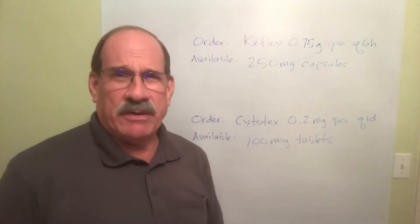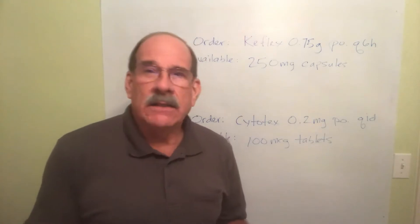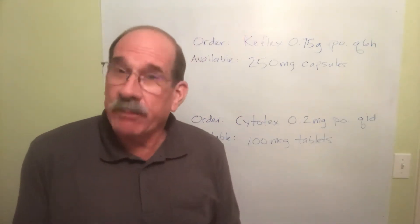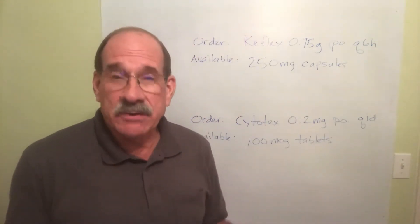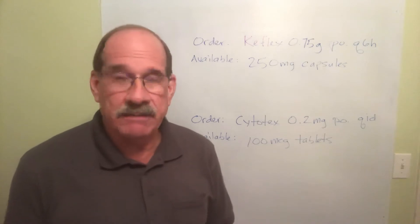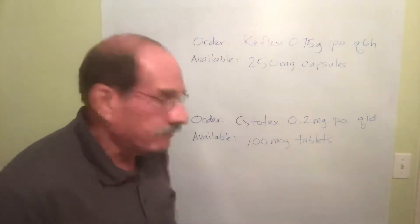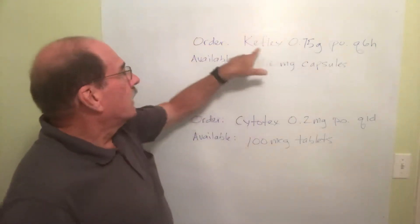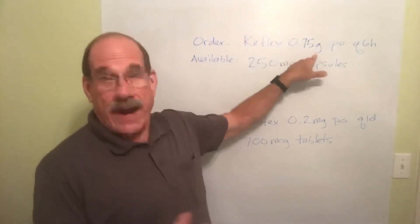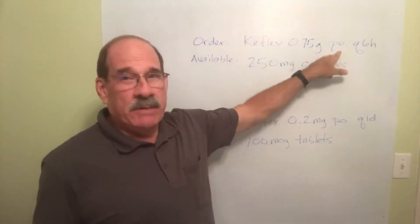We're digging deeper and deeper as we go, getting a little more different kinds of problems that you're going to encounter. You need to know how to do them when you see them, but you set them up the same way every time, no matter what. The order: we have some capsules, 0.75 grams to be given PO, by mouth, orally, every six hours.